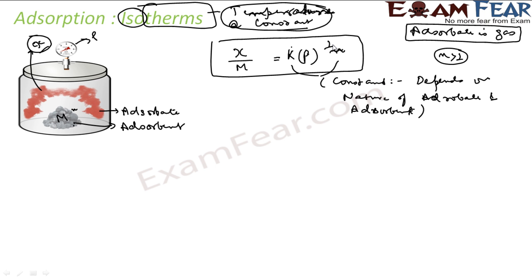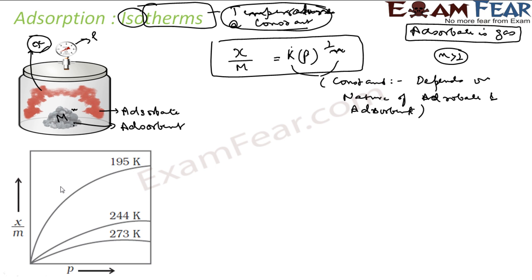This is performed experimentally actually. You see the plot. The graph is plotted. This is x by m here and this is pressure here at different temperatures. As I told, isotherm is temperature is fixed. So at different temperatures they found this kind of plot.